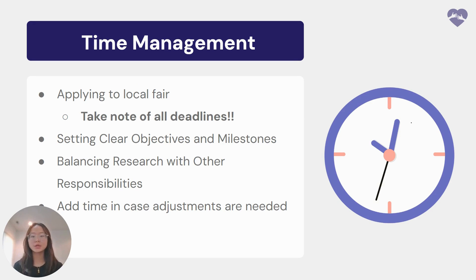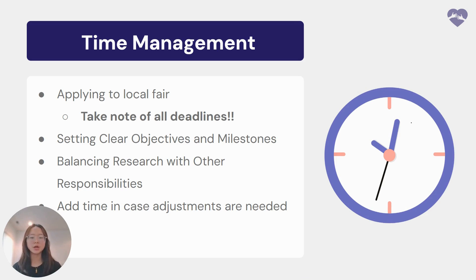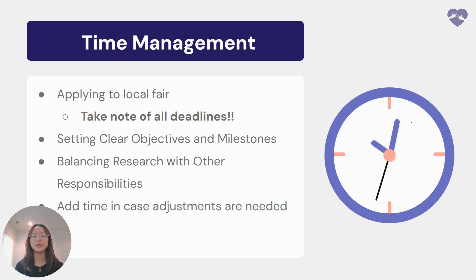Second, make sure you're setting clear objectives and milestones. Break down your research project into smaller, manageable tasks with their own mini deadlines. This not only makes the project less overwhelming, but also allows you to track your progress. For example, set specific dates for when you'll finish gathering data, start writing your literature review, or begin analyzing your findings.